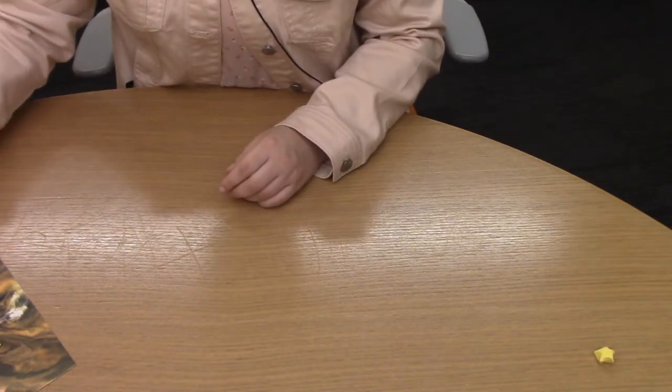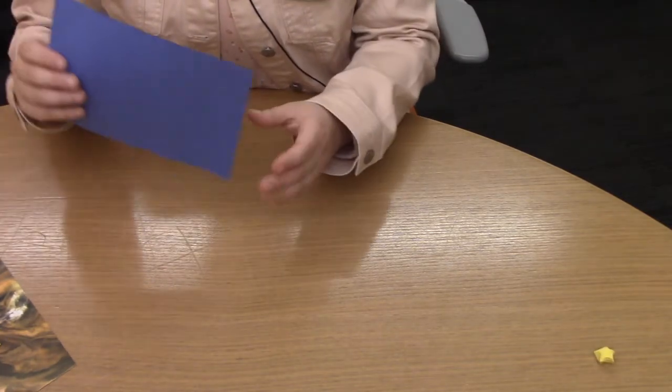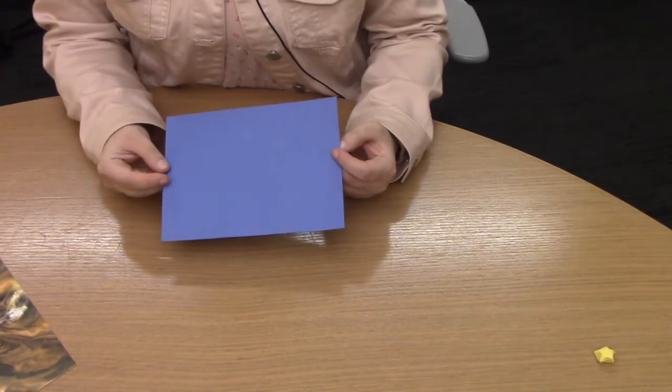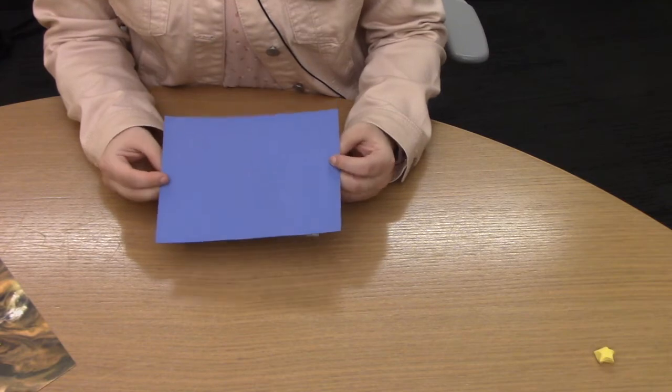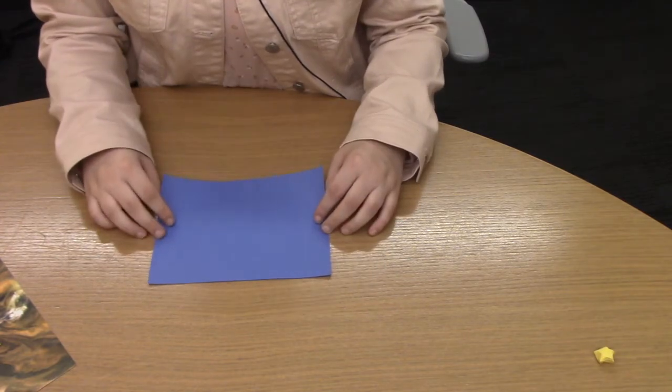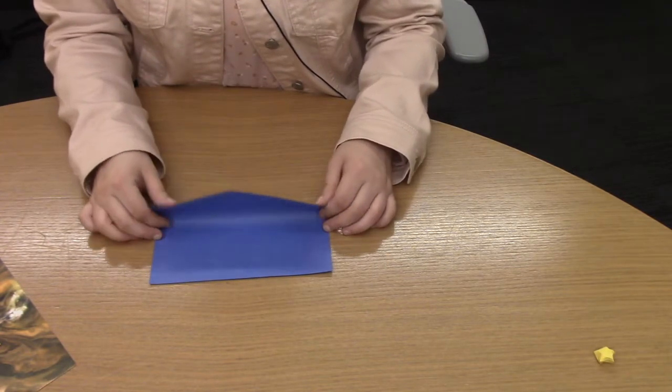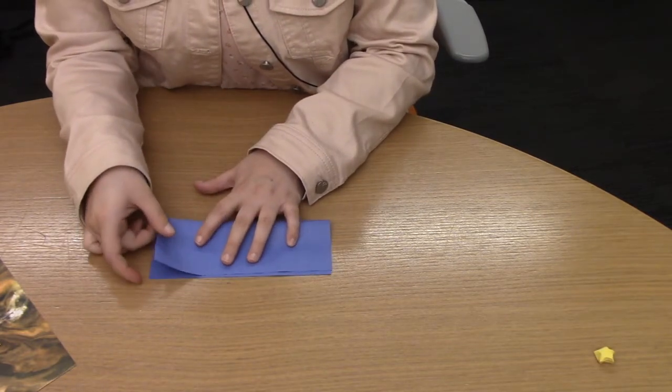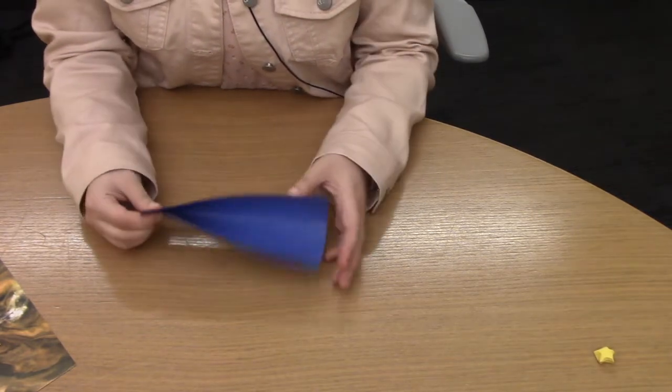For the rocket ship, you're going to want a piece of paper that is seven and a half inches by five and a half inches. And to start, you're just going to fold it long ways like this, making sure that the corners match up.